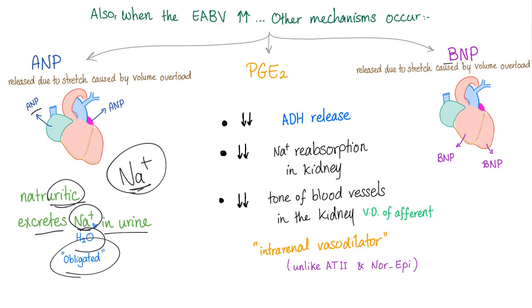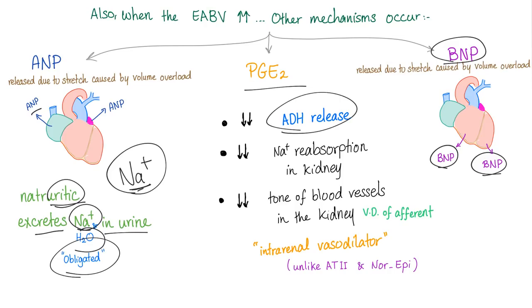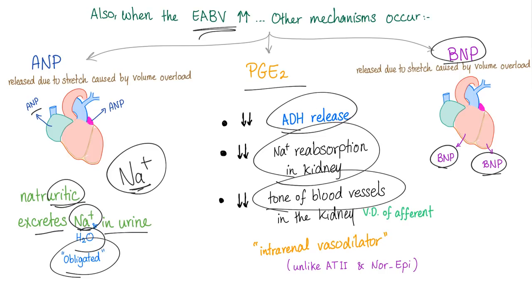Brain natriuretic peptide is the exact same thing but released from the ventricles, not the atria. Prostaglandin-A2 will decrease ADH release — you don't want ADH when effective arterial blood volume is high. It will decrease sodium reabsorption in the kidney, decrease the tone of blood vessels — specifically the afferent arteriole in the kidney — causing vasodilation. This is different from angiotensin-2 and norepinephrine, which cause vasoconstriction.